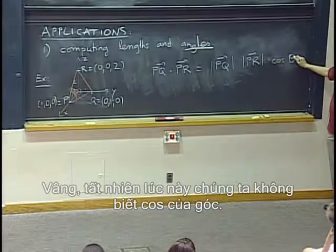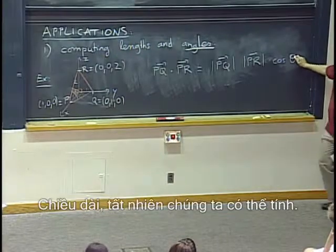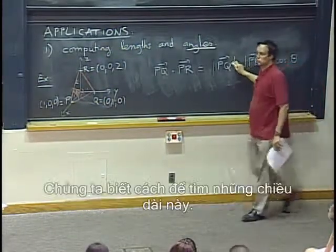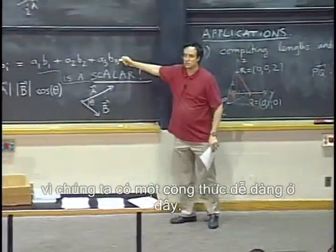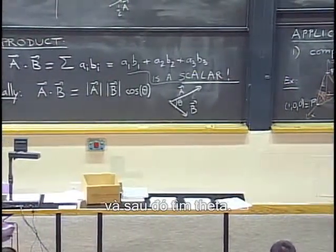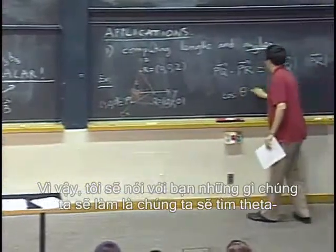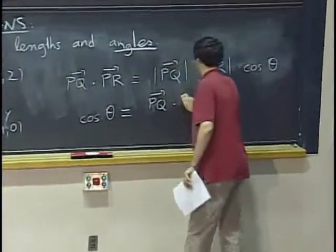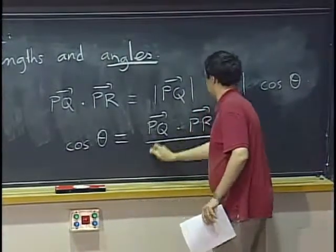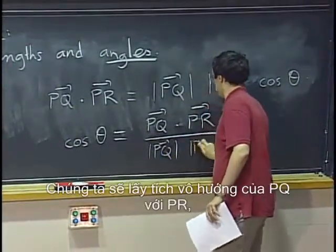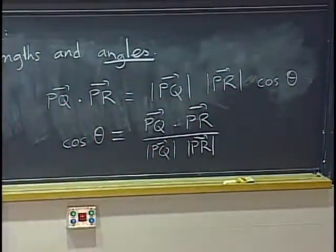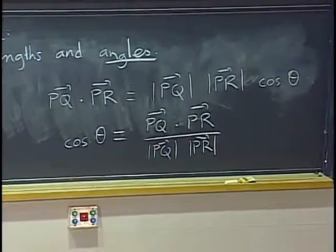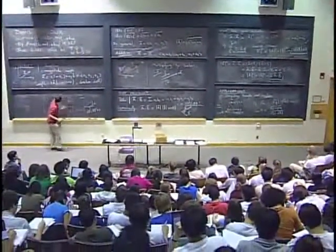Well, certainly at this point we don't know the cosine of the angle. That's what we would like to find. But the lengths certainly we can compute. We know how to find these lengths. And this dot product we know how to compute because we have an easy formula here. OK, so we can compute everything else and then find theta. So actually what we will do is we will find theta in this way. We will take the dot product of PQ with PR and then we will divide by the lengths.